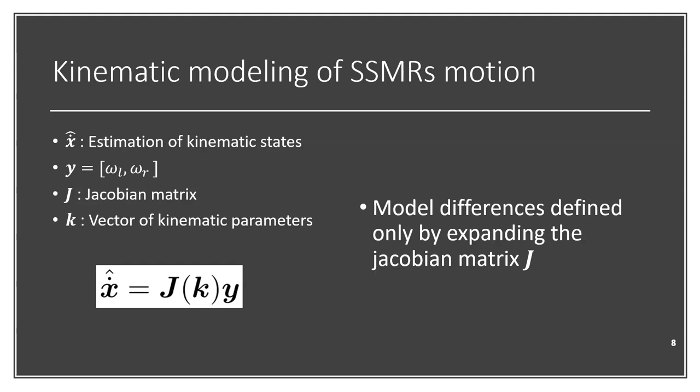The relation between both of them is given by a Jacobian matrix J, which includes a set of k kinematic parameters that aim to model the vehicle behavior on different terrain types. Now, for the sake of simplicity, in our article, we highlighted the model differences between each model only by expanding the Jacobian matrix J that is shown here.